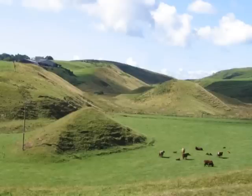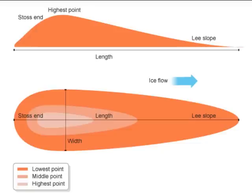Drumlins can also form by deposition. These are elongated hills of glacial deposits. They can be 1km long and 500m wide, often occurring in groups. A melting glacier is overloaded with moraine, rocks and boulders. A glacier meets a small obstacle which causes material to be deposited. Boulder clay is deposited behind the obstacle and forms the blunt end, or stoss end, of the drumlin. The moving ice moulds the boulder clay into shape around the obstacle, forming a tapered end, or lee slope.